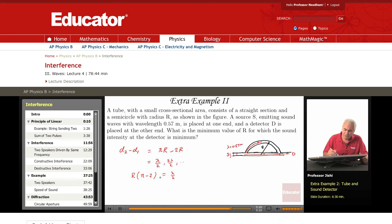So lambda is 0.57 divided by 2, and this is 3.14 minus 2. So that gives me 0.57 over (3.14 minus 2), that's 1.14 times 2, that's 2.28, and this is 0.25 meters.